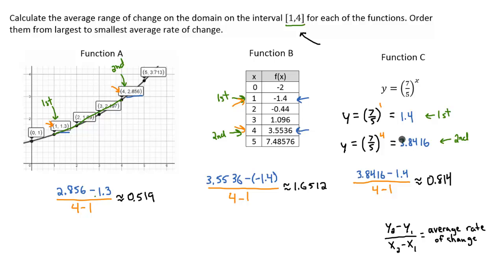So now I want to go ahead and compare all of these. I want to find the largest to smallest. So the largest average rate of change on the domain of the interval 1 to 4 is going to be this one right here. That's the largest. The one in the middle then is going to be function C with that rate. And then function A is going to be the slowest with the average rate of change of 0.519.